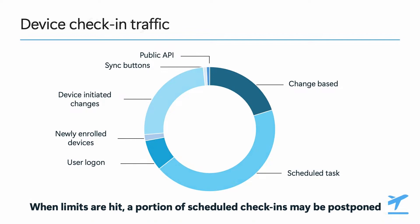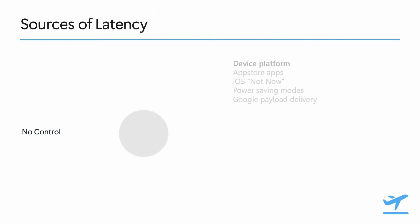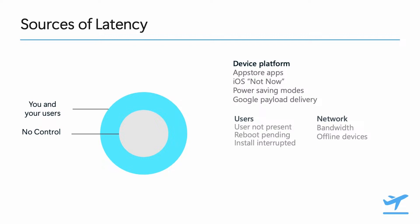But when a device or organization hits their check-in limits, we will start prioritizing change-based check-ins over maintenance check-ins, and if necessary we might ask a portion of devices checking in for maintenance reasons to come back later. We just touched on one reason for latency — devices getting throttled — but there are more. Some we do not have control over, like platform-specific optimizations for when or how devices can or cannot apply changes. A good example is "Not Now" on iOS and iPad platforms, or devices triggering power-saving modes.